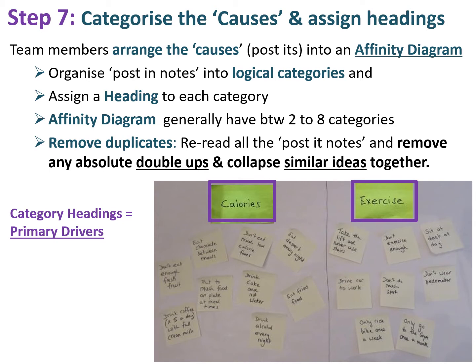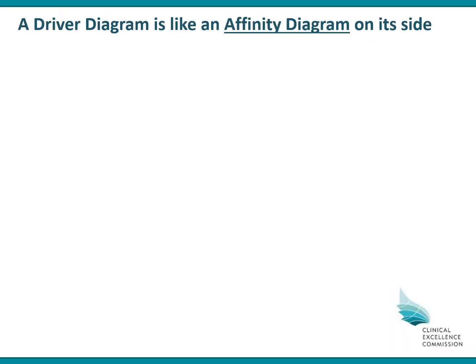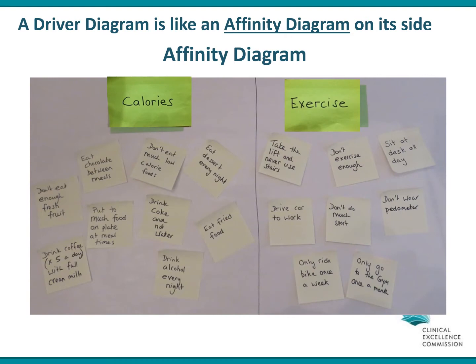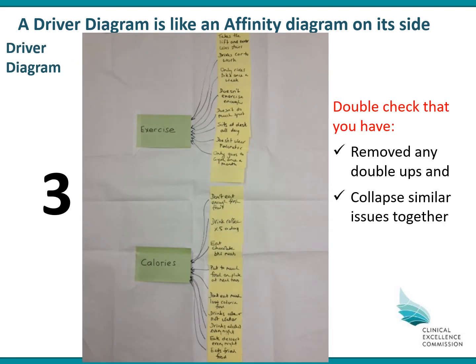In the driver diagram, the category headings become your primary drivers and the causes become your secondary drivers. A driver diagram is essentially an affinity diagram on its side — take the affinity diagram from David's case, spin it around and put it into two columns, and that's how you form the driver diagram. Double check that you've removed any duplicates and collapsed similar issues together.